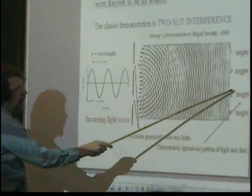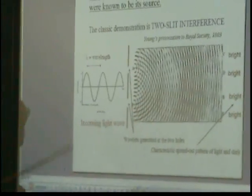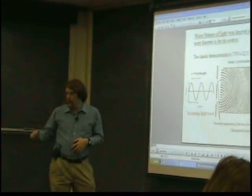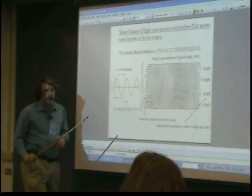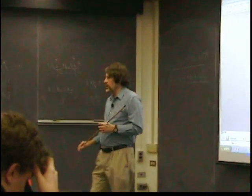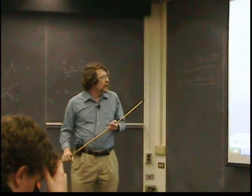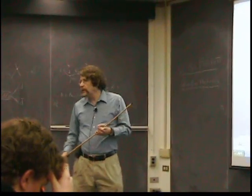And you get a pattern of bright, dark, bright, dark, bright, dark, which is where the things have added up or subtracted. So that's the characteristic spread-out pattern of light and dark, if you get it from waves. It's known as the interference pattern, and this is the two-slit interference experiment.